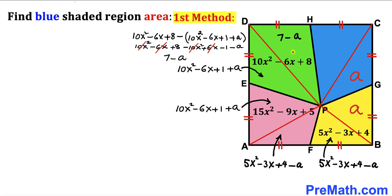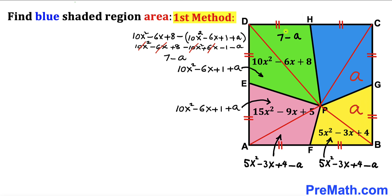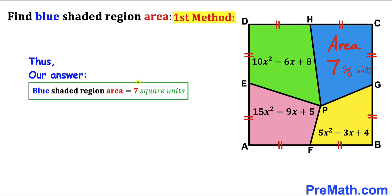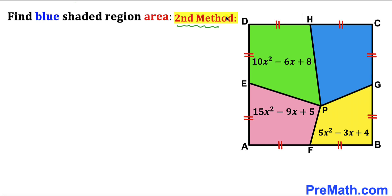The green triangle and the blue triangle share the same base and height at point P, so the area of the blue triangle is also 7 minus a. Therefore, the area of the blue shaded quadrilateral is (7 minus a) plus a, and the a terms cancel, giving us the area of the blue shaded region equals 7 square units.